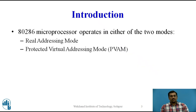The 80286 microprocessor operates in either of two modes. The first mode is the real addressing mode, in which the processor works similar to the 8086 microprocessor only with faster speed. The second mode is a special mode called the protected virtual addressing mode, in which the microprocessor has memory management and protection abilities.